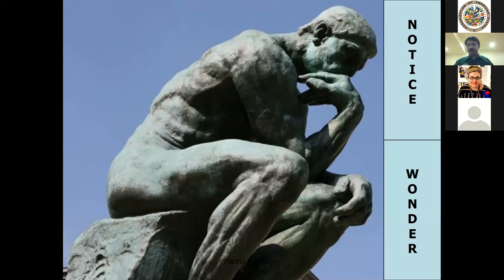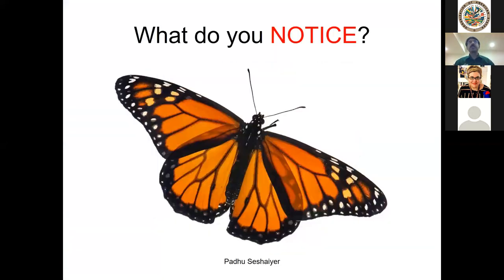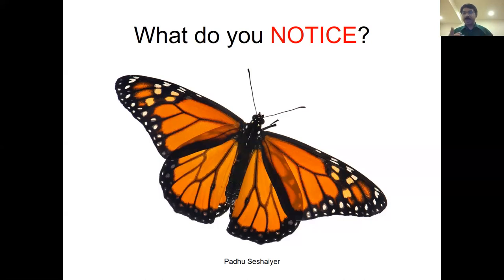Now I'm going to take you to the next learning framework — it's called Notice and Wonder. Type anything that you notice about this picture. What do you notice? Wings, butterfly, orange, symmetry — you must be a mathematician — fly, color, spots, stained glass, antenna. Somebody noticed the antenna.